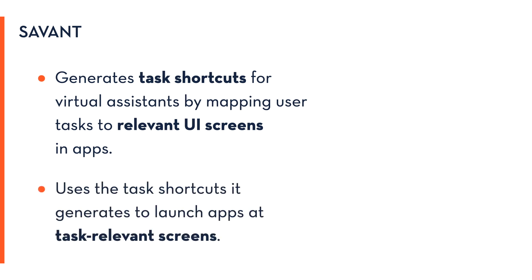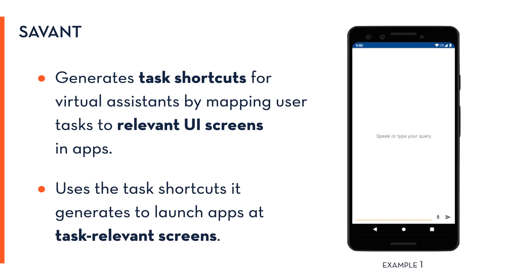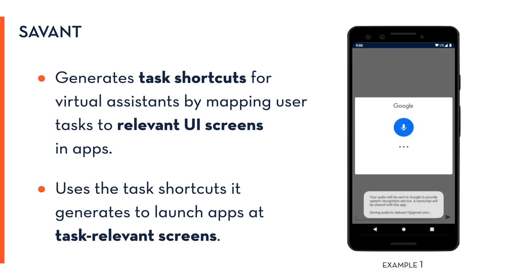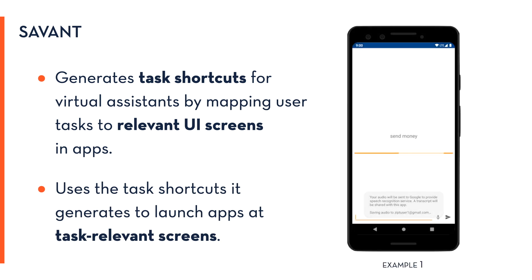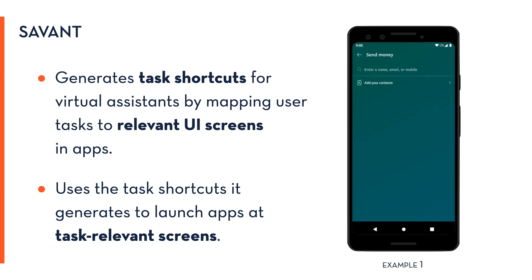Savant uses these shortcuts to launch apps at task-relevant screens. Here we see when the task description 'send money' was given, Savant automatically launches the PayPal app at its relevant screen.